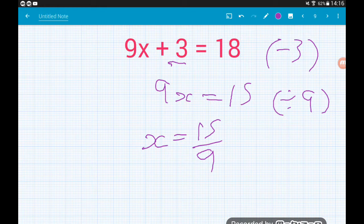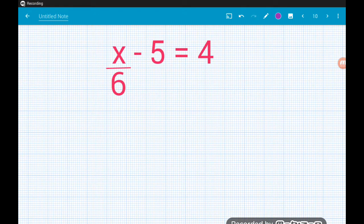Up on top, 15 divided by 3 will give us 5. On the bottom, 9 divided by 3 will give us 3. So we can write 15 ninths as 5 over 3. So x is equal to 5 thirds. Okay, so now we're looking at equations with divisions of x in them. Let's see how we go with these.